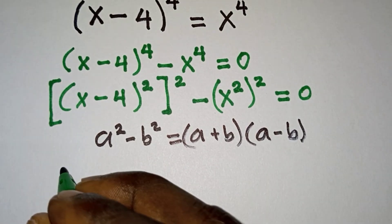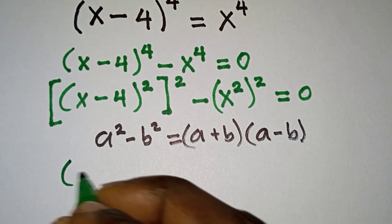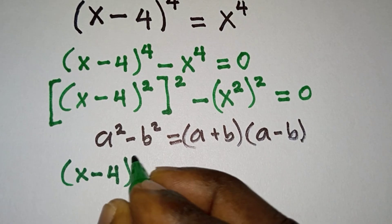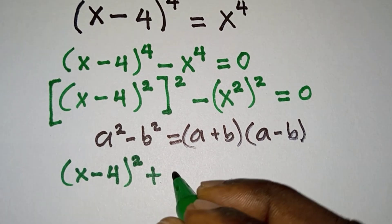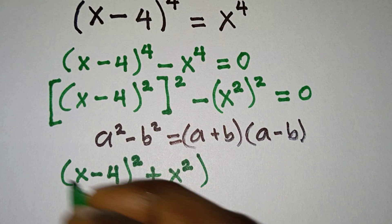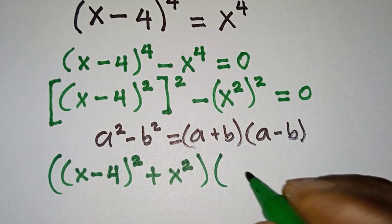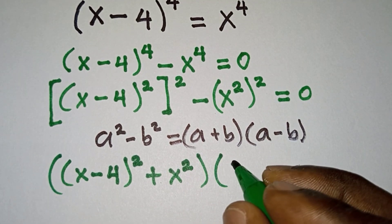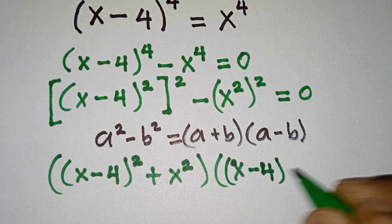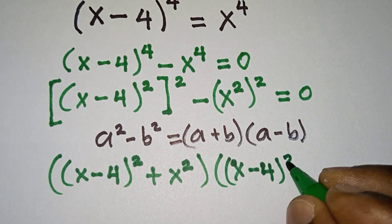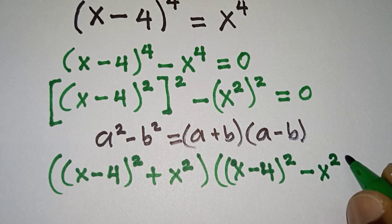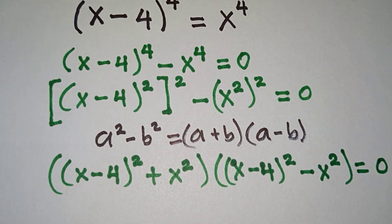So we will have: (x minus 4) squared plus x squared, times (x minus 4) squared minus x squared, and this is equal to 0.